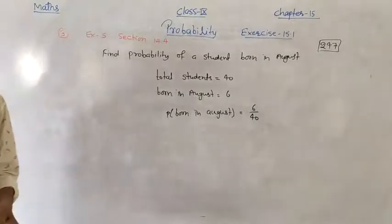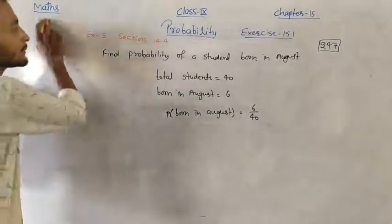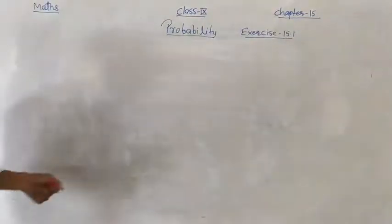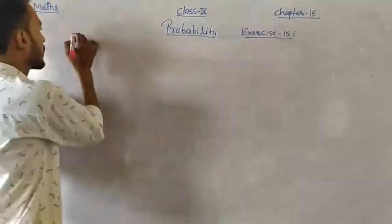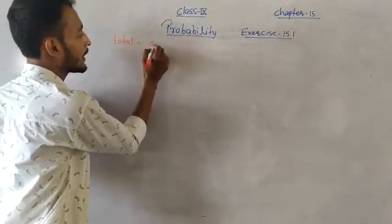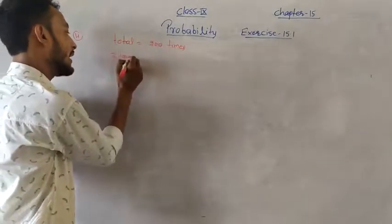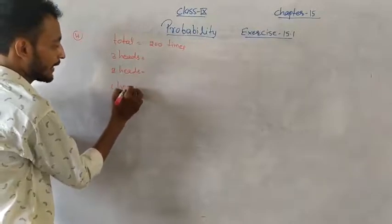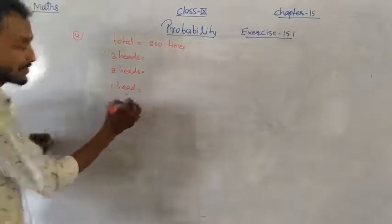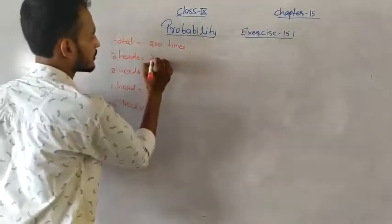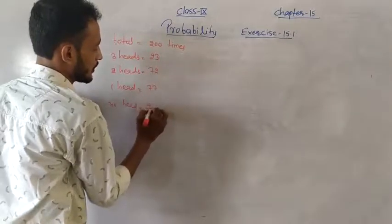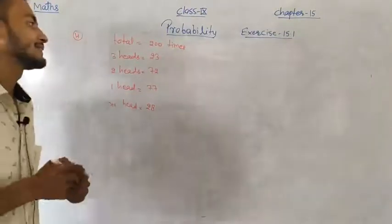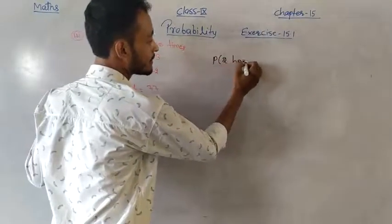Question number four: Three coins are tossed 200 times. Results are given in a table showing three heads, two heads, one head, and no head outcomes. You are asked: what is the probability of two heads? The formula is: data in favor upon total number of data.